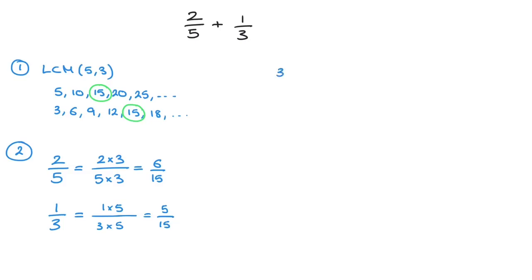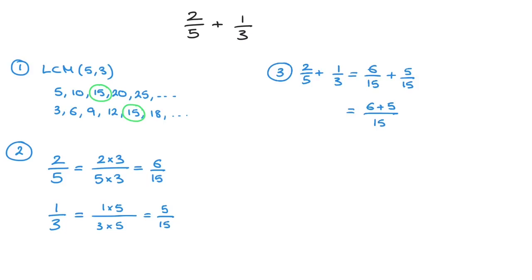Our third and final step — step 3 — is to actually add the two fractions. I can now state that 2 over 5 plus 1 over 3 is equal to 6 over 15 plus 5 over 15. And now that both fractions are written over the same denominator, we can add them simply by adding their numerators: that would be 6 plus 5 over 15, which finally equals 11 over 15. And that's the final answer.